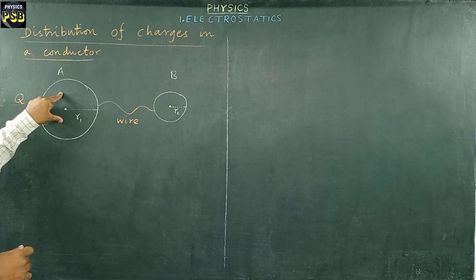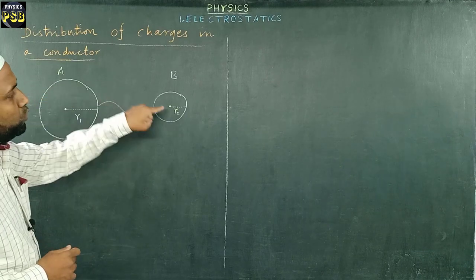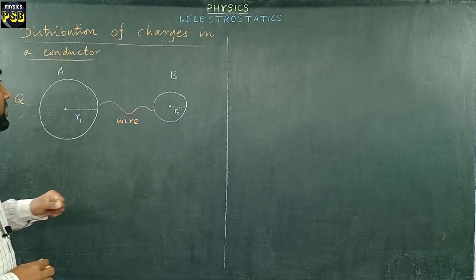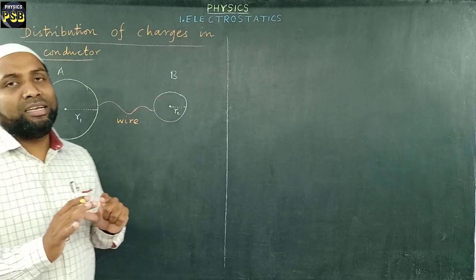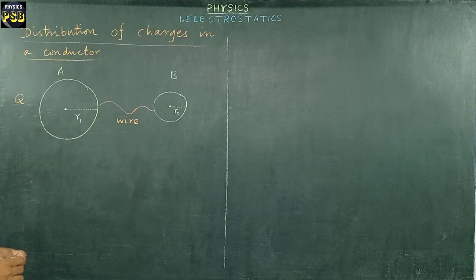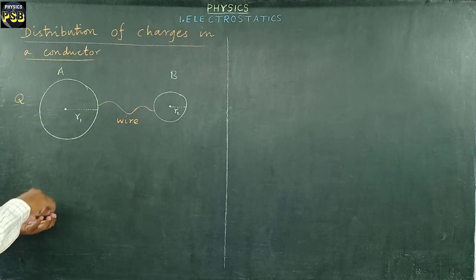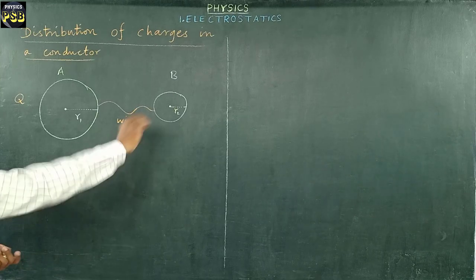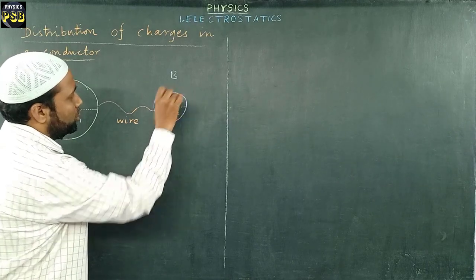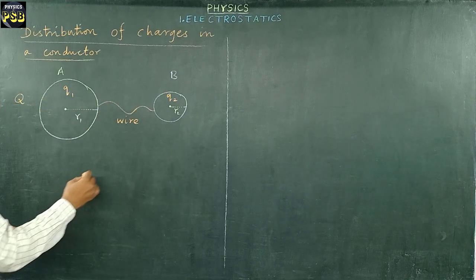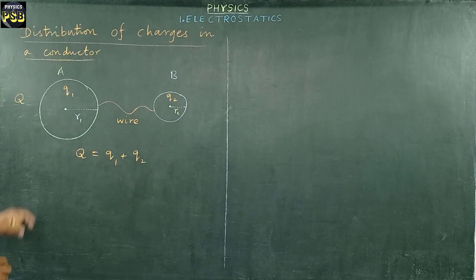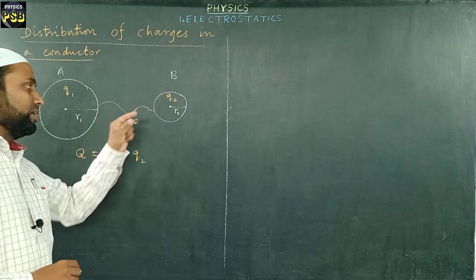The charges which were present in A start moving to conductor B. The transfer of charge occurs till the potential at A and B becomes equal. After the distribution of charge between these two conductors, the charge of A is taken as Q1 and the charge of B is taken as Q2. If you add Q1 and Q2, you will get the total charge Q originally supplied to A.